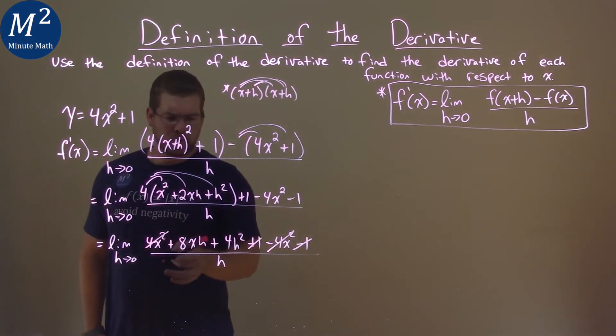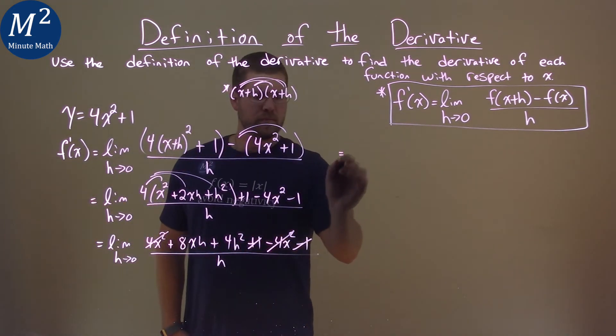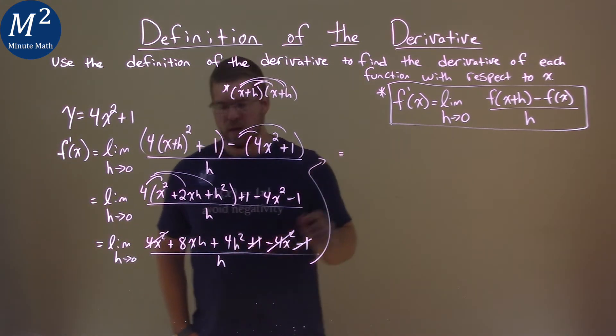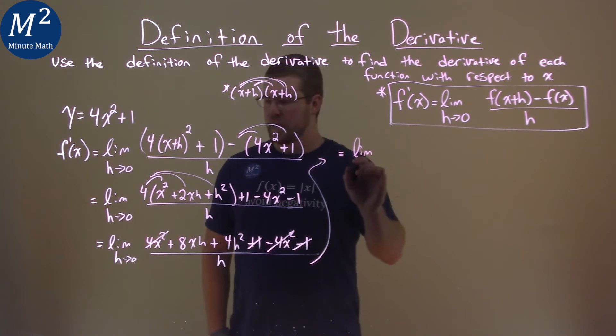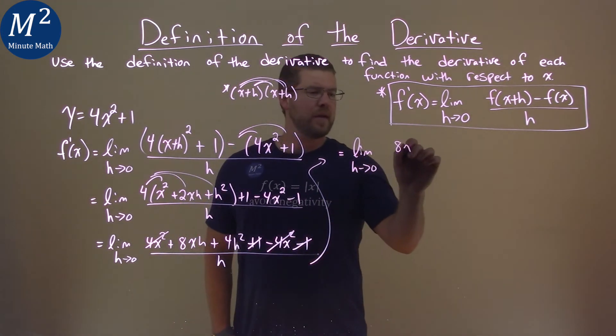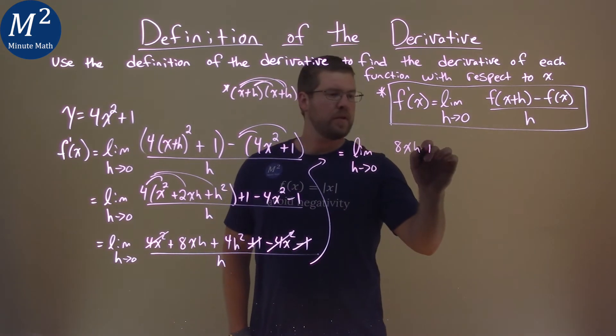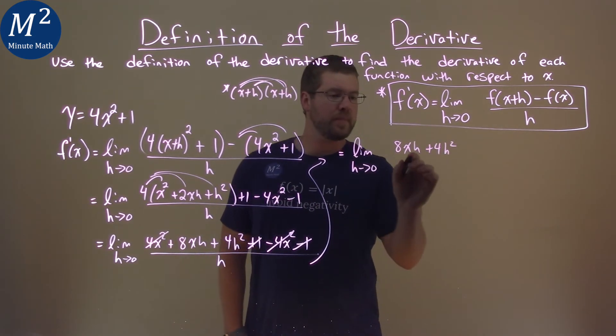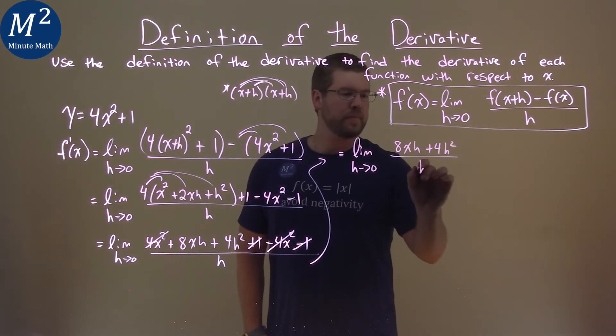And what do we have in the numerator? Well, we can rewrite that up here. So let me just continue this right here. We're still going to take the limit as h approaches zero and we have 8xh plus 4h squared, and that's all over h.